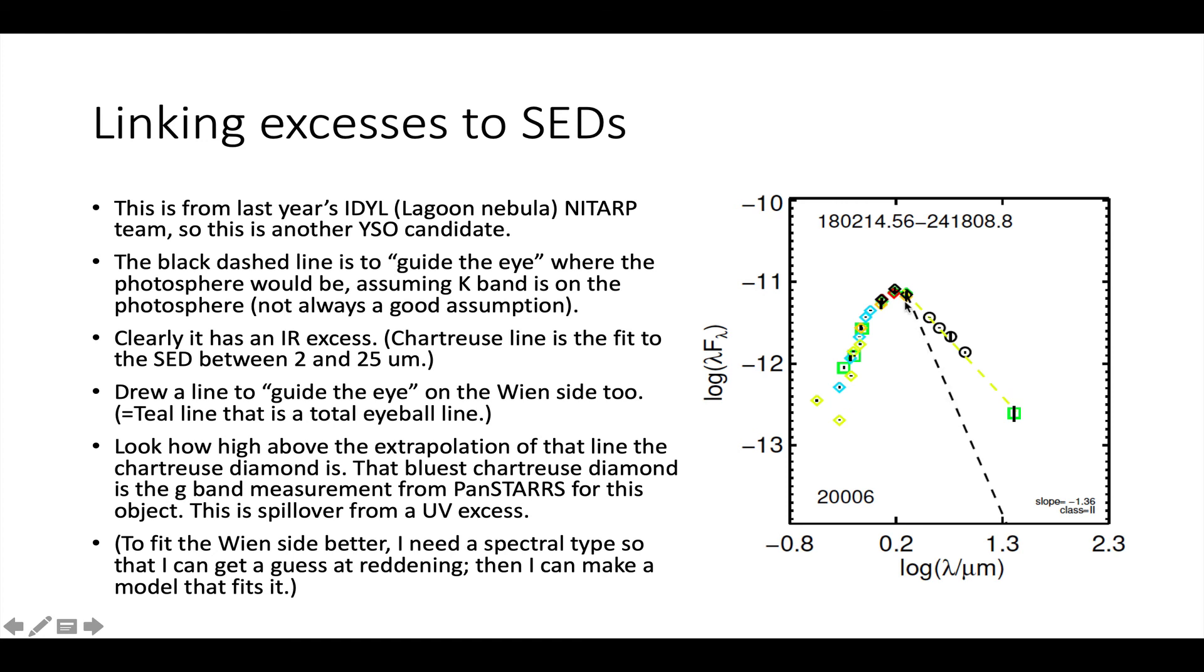I'm going to draw a line to guide the eye on the Wien side as well. That's a little harder to do because it has to be a curve, but you can see that it goes through almost all the data points pretty well, and then the bluest data point is really high. That's the G-band measurement from PanSTARRS. Assuming that G-band measurement is accurate, this star has a pretty big ultraviolet excess because it's spilled over from the U-band into the G-band and you can see that it's a pretty big excess. It's like a dex, it's like an order of magnitude in there.